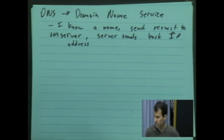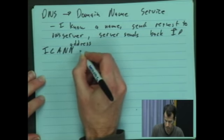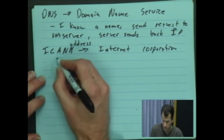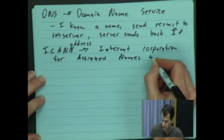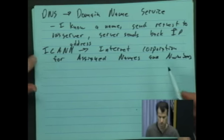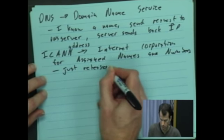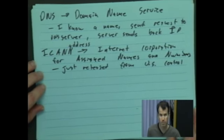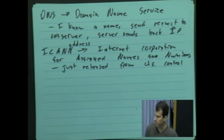Notice there, it only sends back IPv4. So why does this matter? ICANN — the Internet Corporation for Assigned Names and Numbers — just went international. The U.S. Commerce Department used to control this, and they just formally passed it over, saying this is not going to be just a U.S. thing anymore.